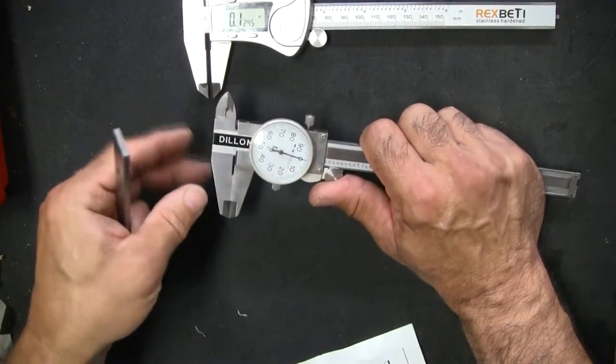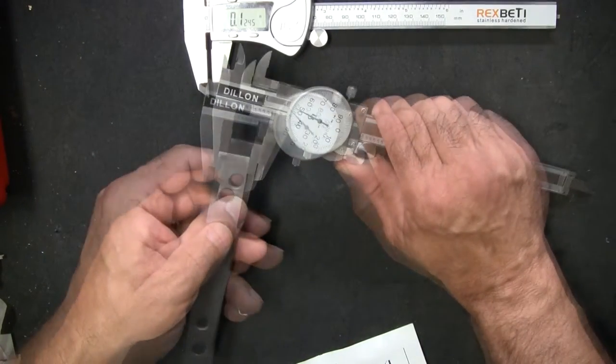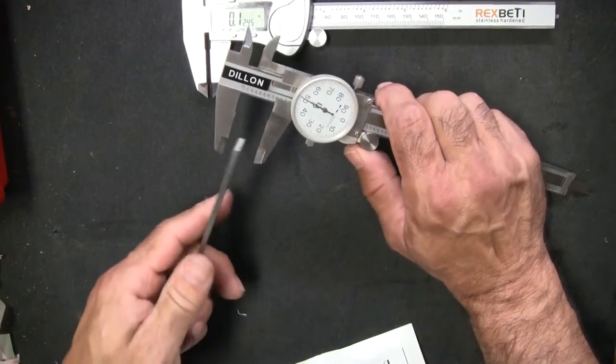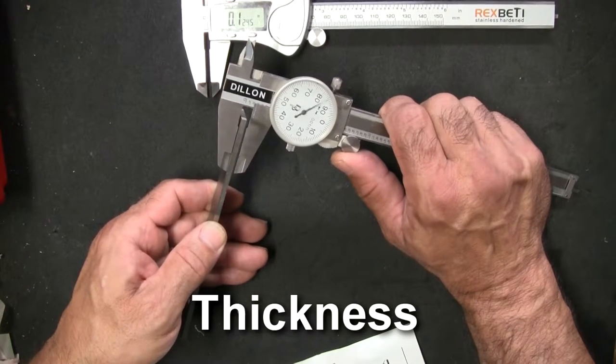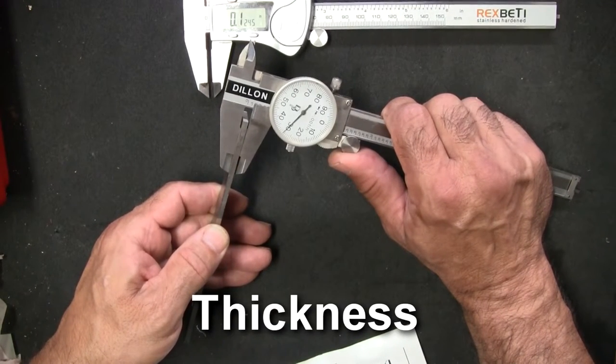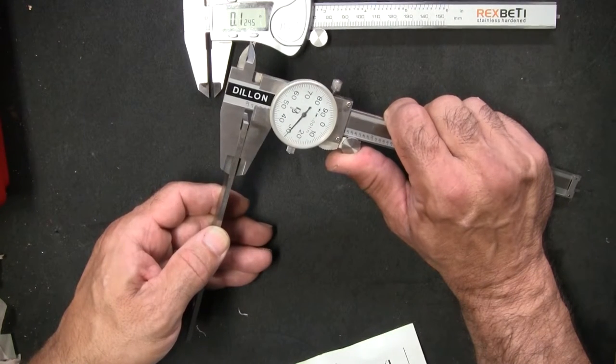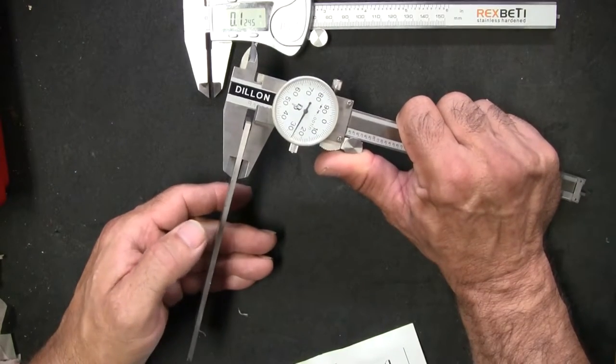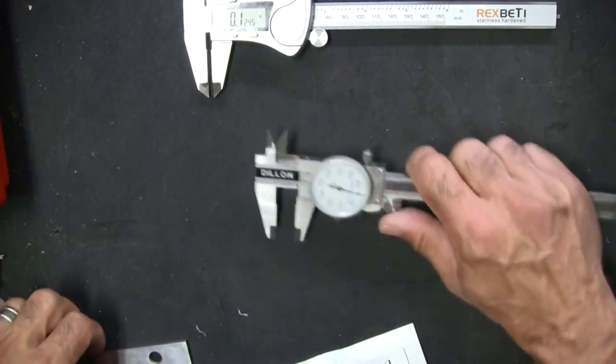Now what about depth? We know this is one-eighth of an inch depth, and that should be point one two five, which it is.